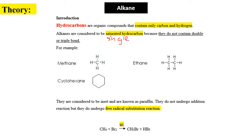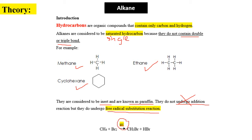Alkanes do not contain double or triple bonds. Examples are methane, ethane (two carbons), and cyclohexane, which is a cyclic compound with six carbons. Alkanes are considered inert, also known as paraffins. They do not undergo addition reactions, but they do undergo free radical substitution reactions.